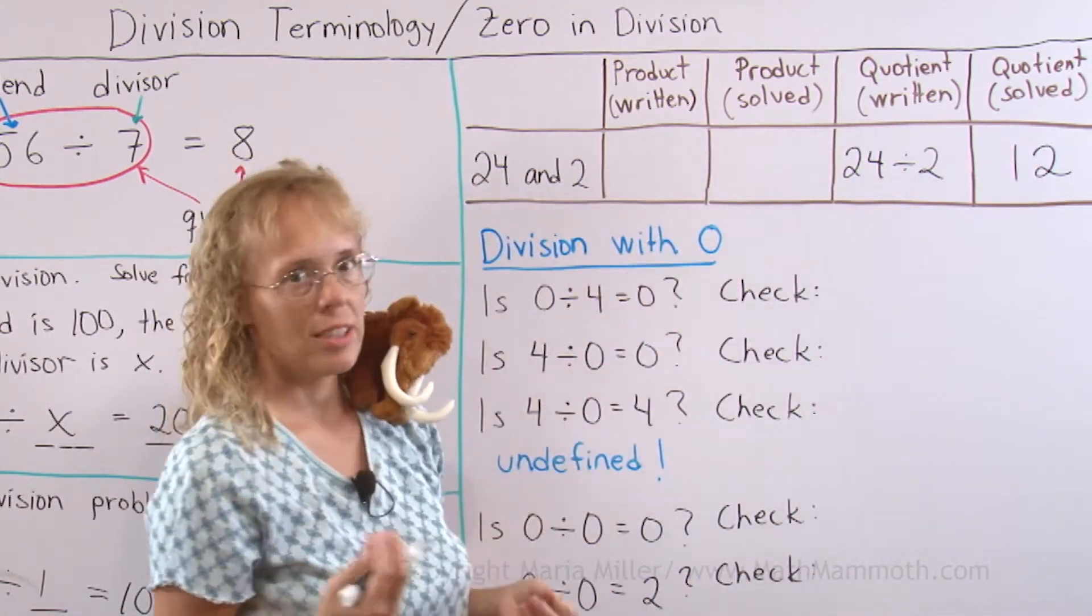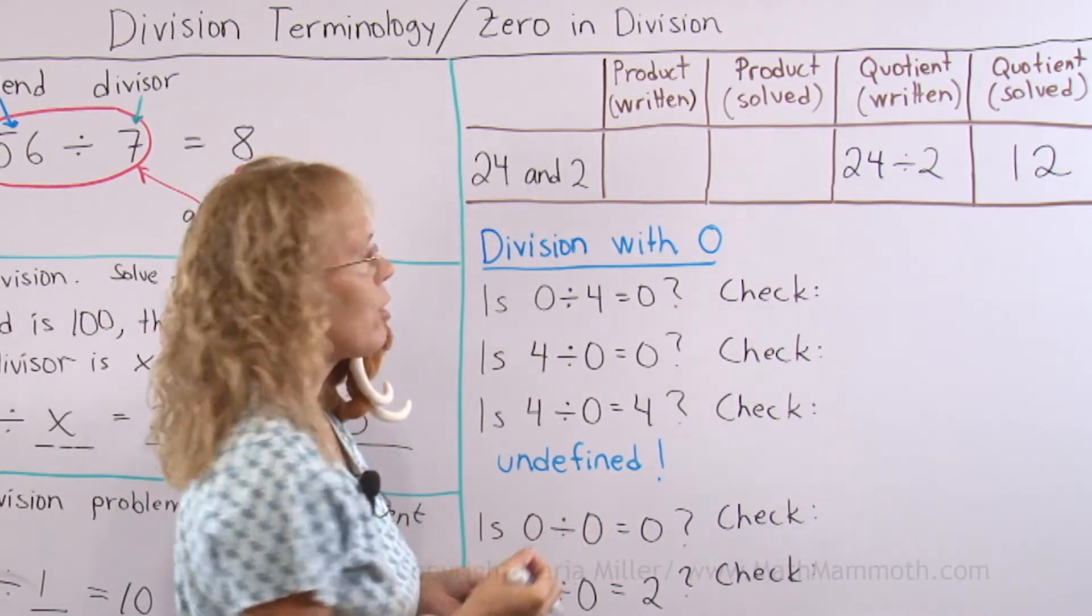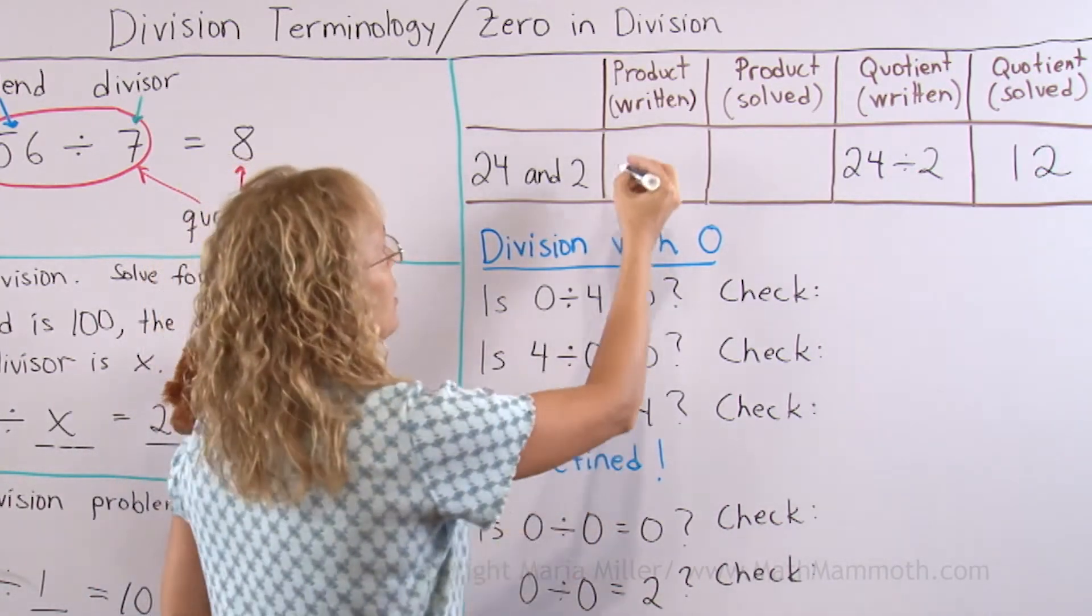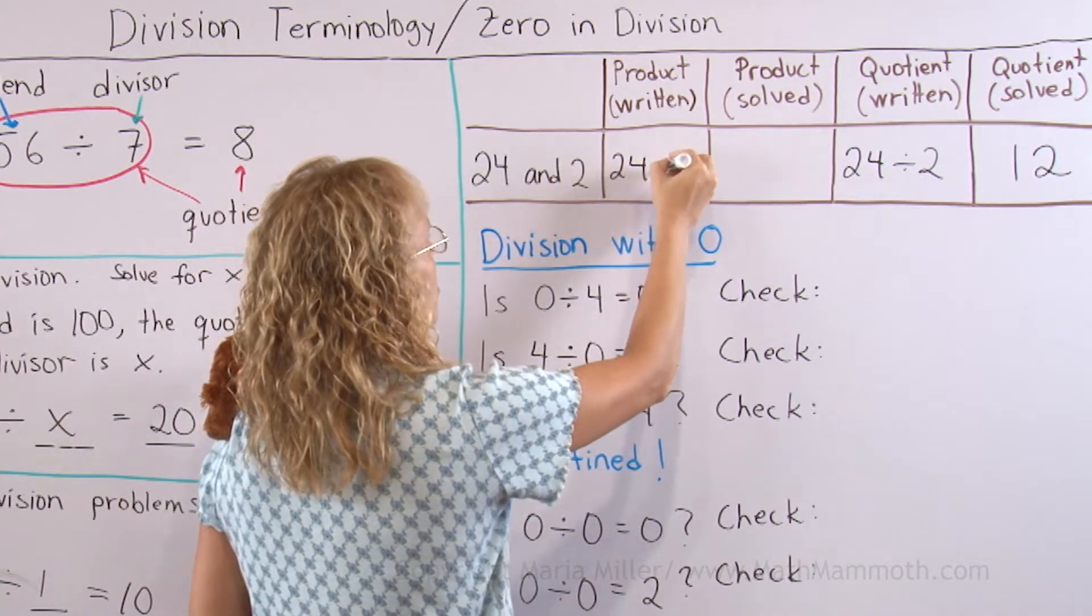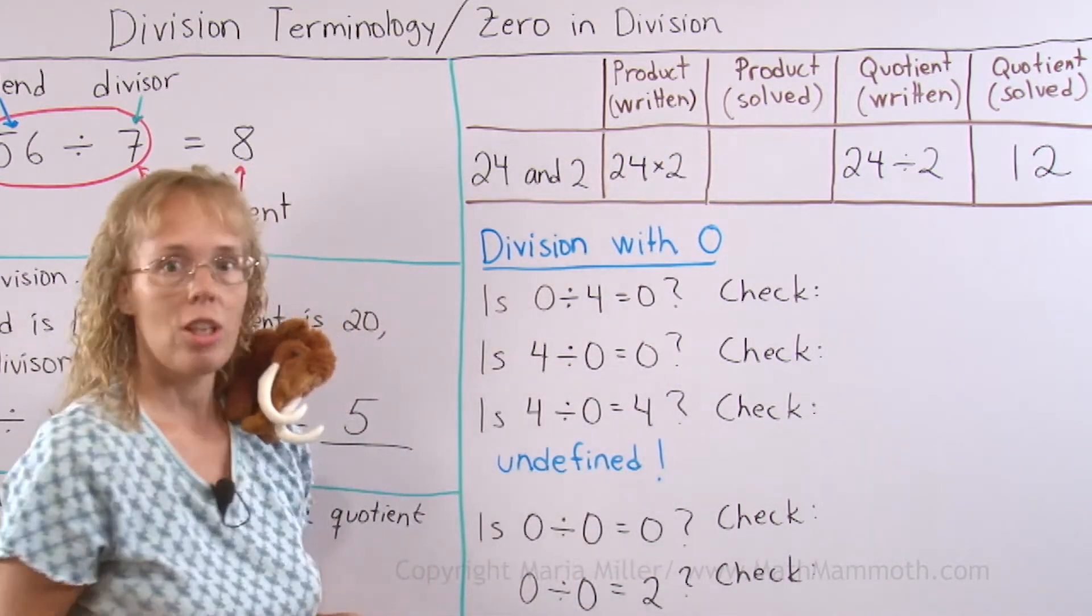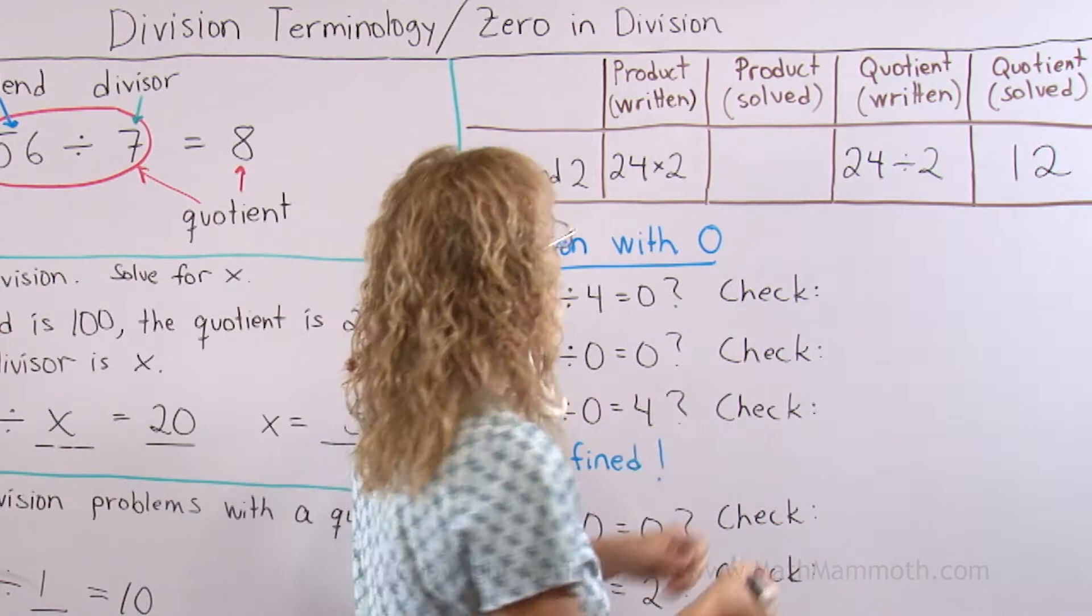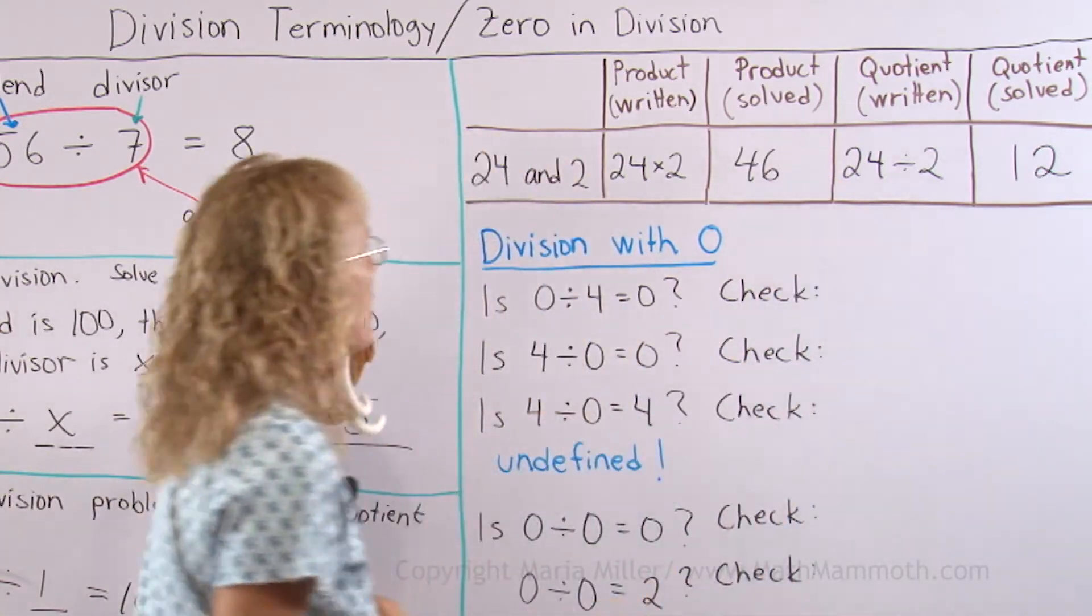Now product written and solved is the same idea. Product, of course, refers to the multiplication. So I would have here 24 times 2. I write out the product without solving it. And then I solve it.